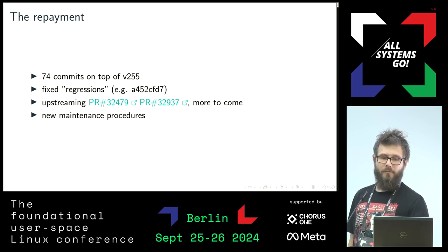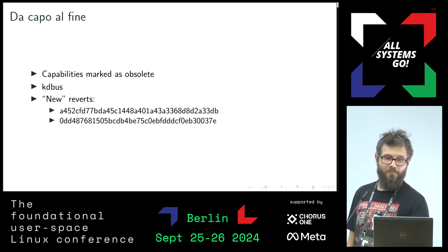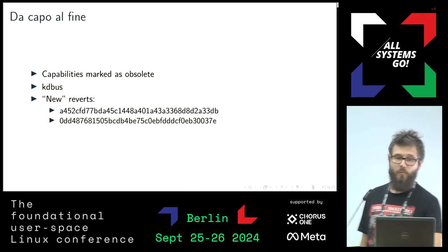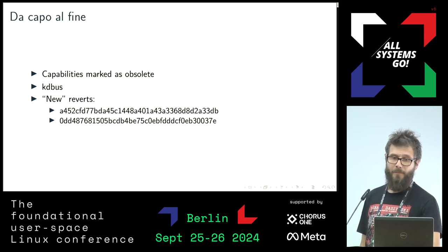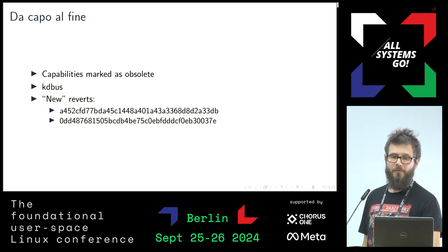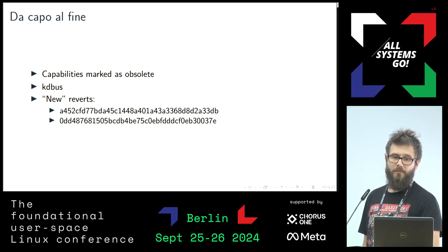Finally, we also decided to change our maintenance procedures. We haven't walked away debt-free, though. We've marked the old capabilities option we used in Tizen as obsolete, which should make its users switch to new configuration options. We still have to maintain KDBus and a few reverts.